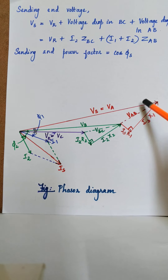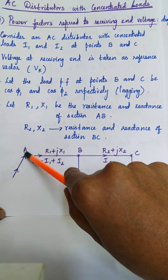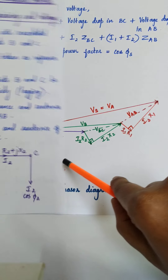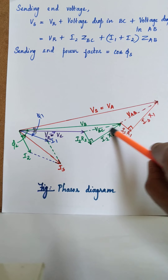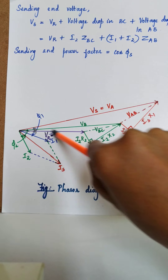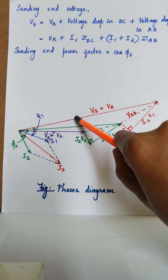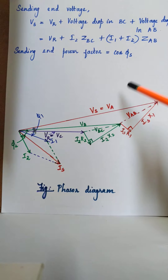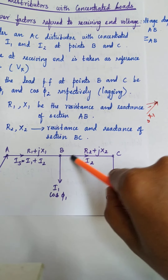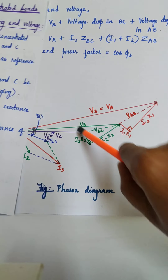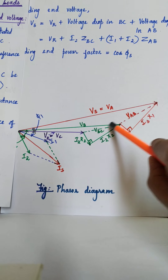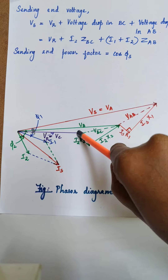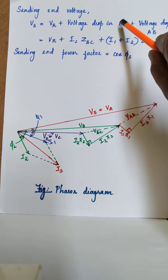VA — the sending end voltage — VS or VA is nothing but receiving end voltage plus VBC plus VAB. We have VR as the reference, the green dotted vector VBC, and the red dotted vector VAB. So VR plus VBC plus VAB is nothing but the sending end voltage VS. If you want the voltage at point B, it is the receiving end voltage plus VBC: VB equals VR plus VBC. VS or VA equals VR plus VBC plus VAB, in accordance with the equation for sending end voltage.